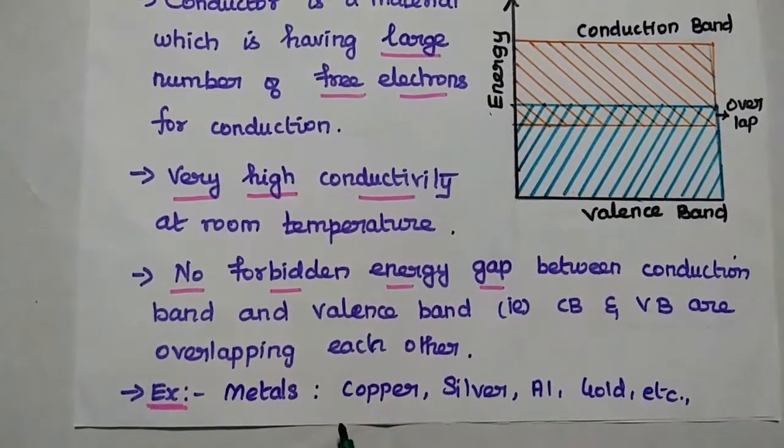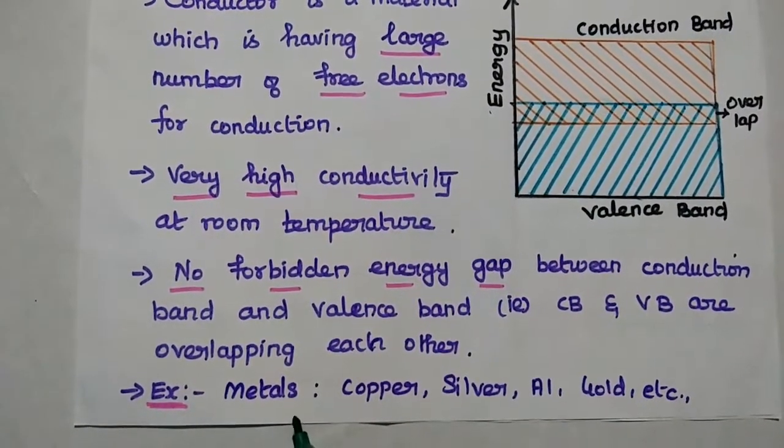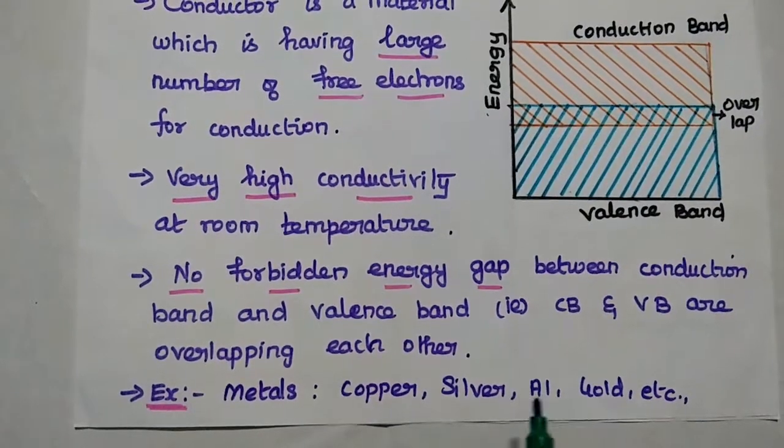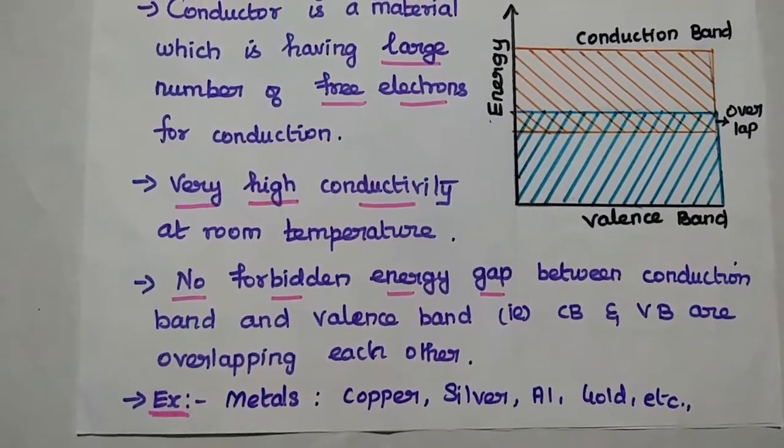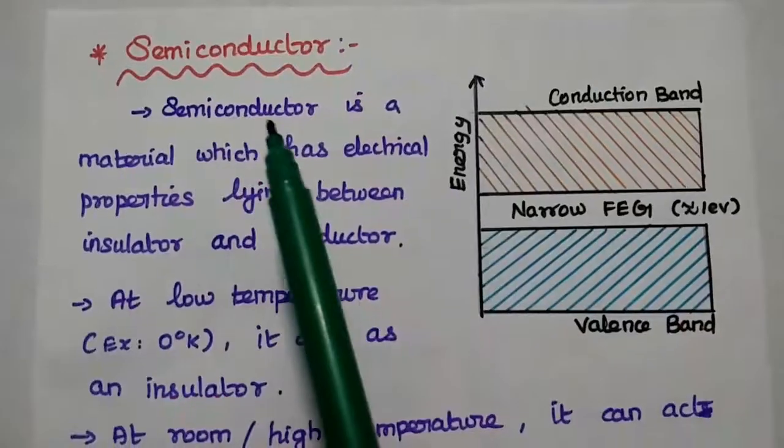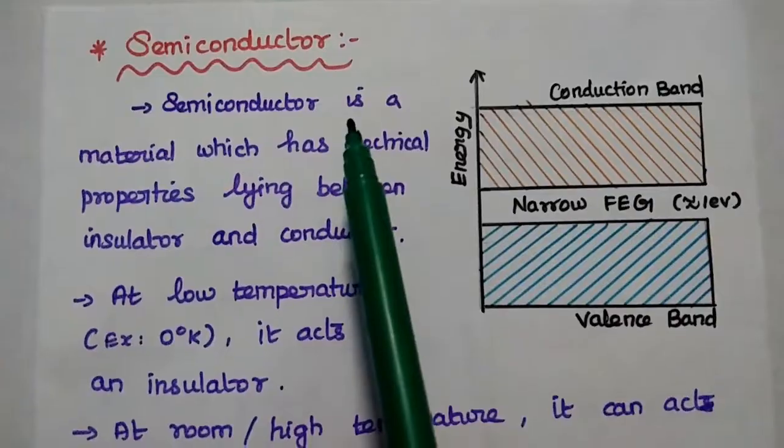Examples of conductors are all kinds of metals: copper, silver, aluminium, gold, etc.